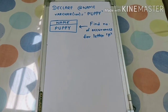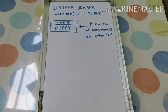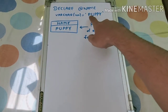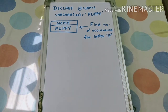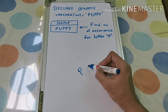Hello friends and welcome back to S Learning. This is our fifth video in the SQL interview question series. The question is to find the number of occurrences for a letter in a given string. Consider a field called 'name' with value 'puppy' — it contains three occurrences of the letter P, and the output should show P and its count, which is three.